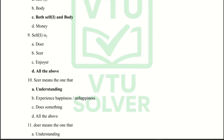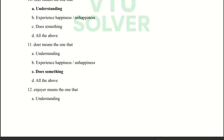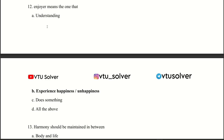Next question: Self is all of the above. Next question: Knower means the one that understands. Next question: Doer means the one that does something. Next question: Enjoyer means the one that experiences happiness or unhappiness.